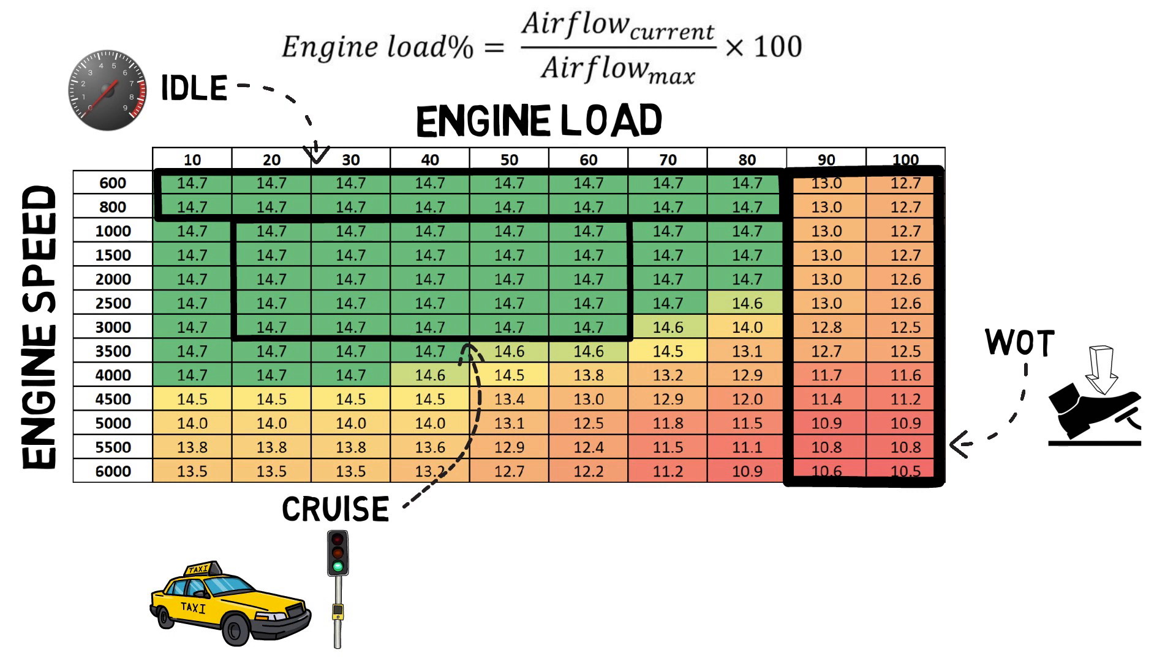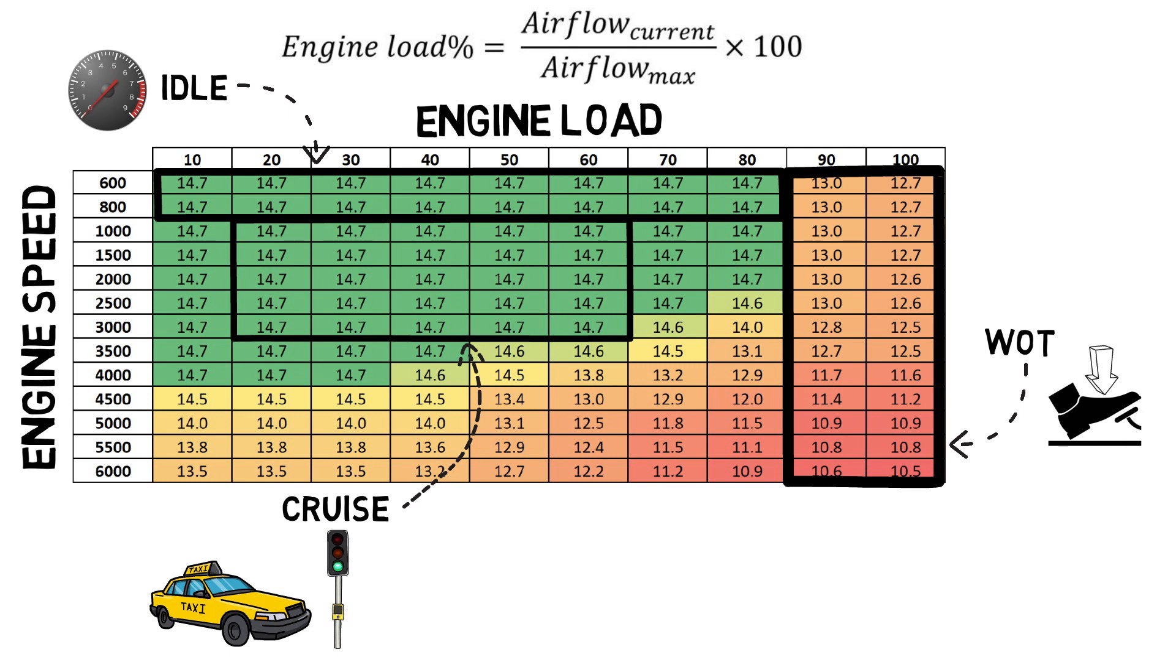As you can see in this sample map, most of the idle and cruise points are at 14.7, while the WOT area is at 13.0 and below. Now let's understand why.